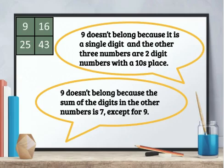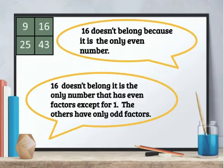Nine doesn't belong because the sum of the digits in the other numbers is seven. For example, one plus six equals seven, two plus five equals seven, and four plus three equals seven. 16 doesn't belong because it's the only even number.